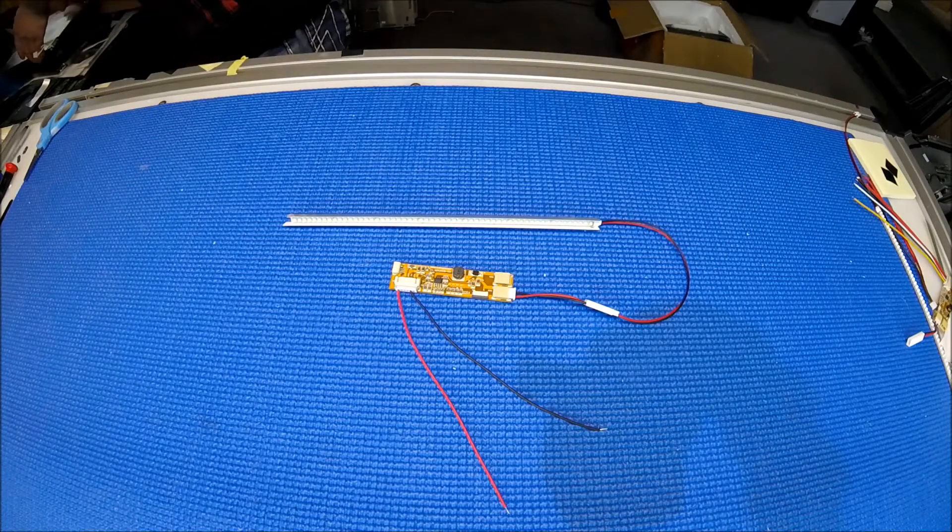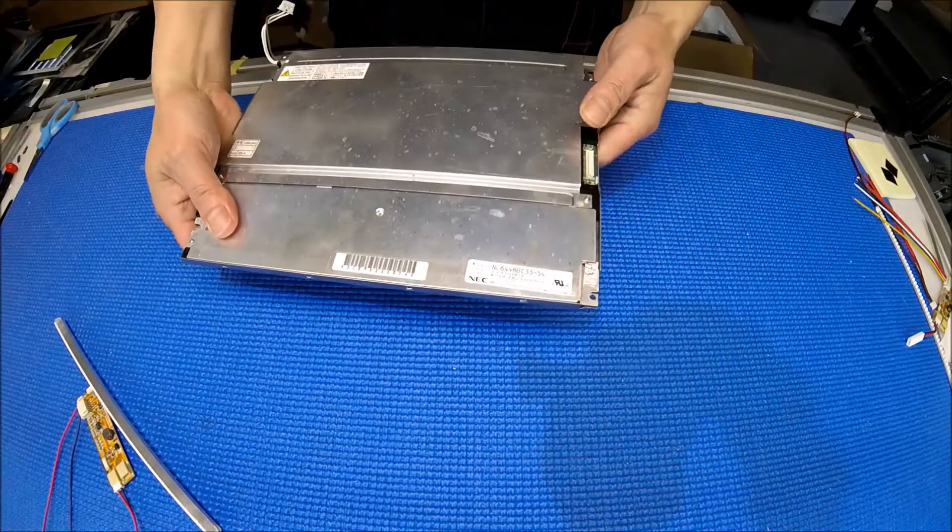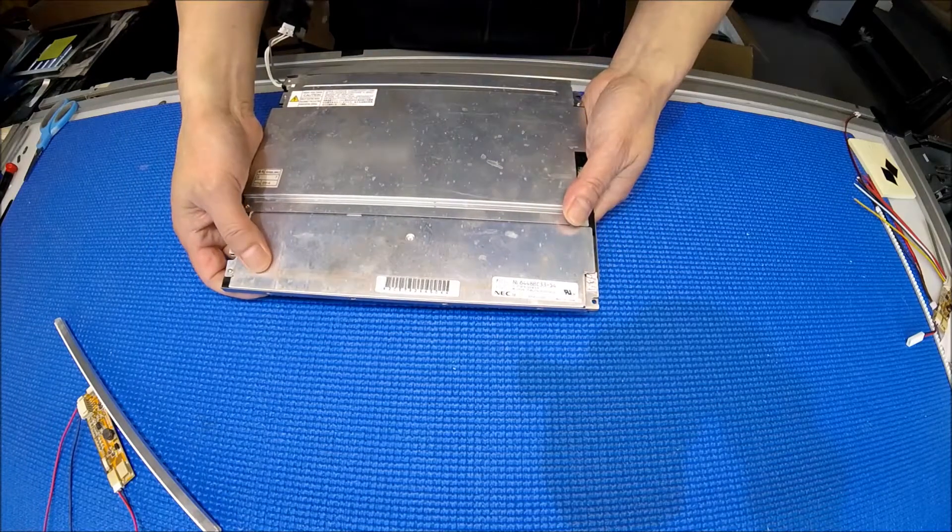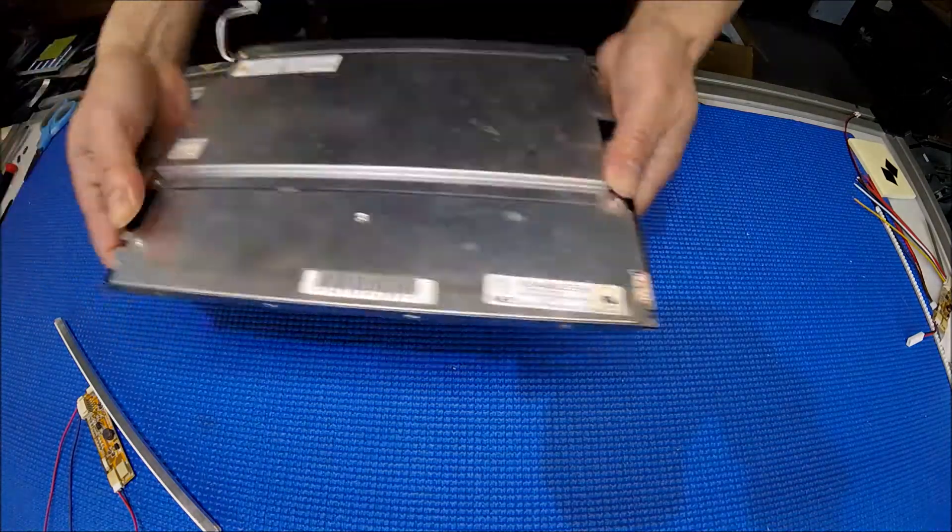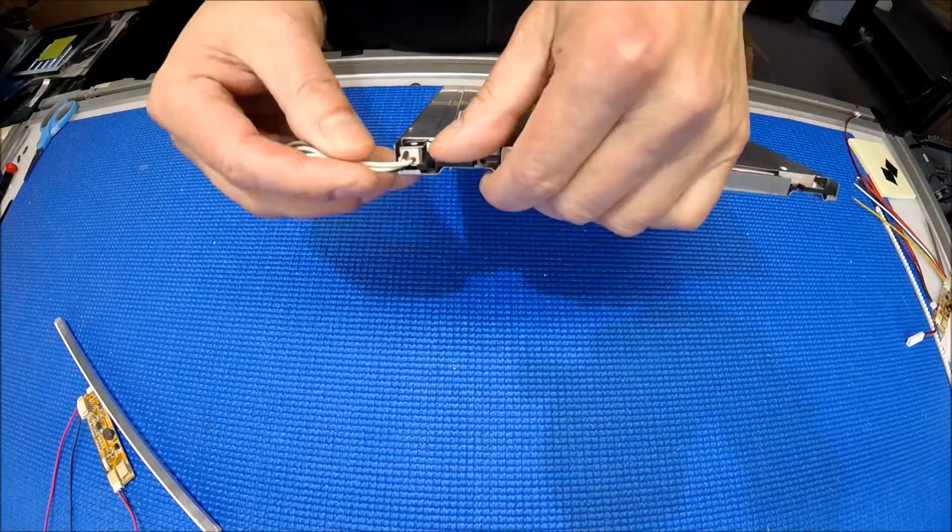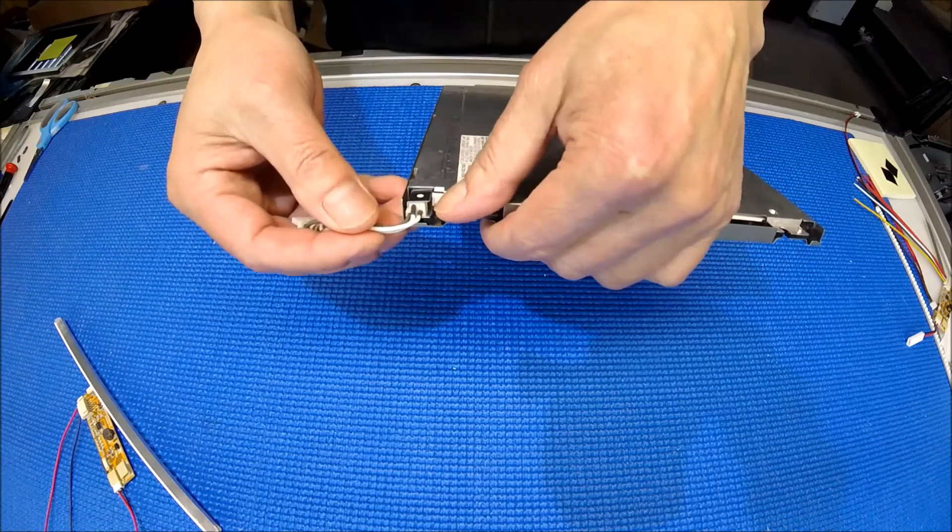Here's a screen, the model number is NL644ABC3354. Basically, all NEC 10.4 inch screens have a clip here that holds the reflector in place.